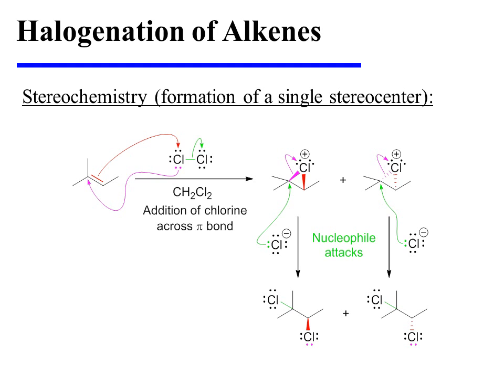Let's first consider an example in which a single stereocenter is formed during the halogenation. This reaction begins with the attack of the alkene pi bond on one of the two chlorine atoms. The other is displaced as chloride. And simultaneously, the chlorine being added to the substrate attacks the alkene carbon that would otherwise have lost a bond, resulting in the formation of a cyclic chloronium ion.